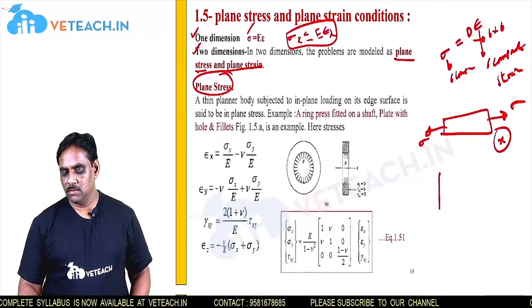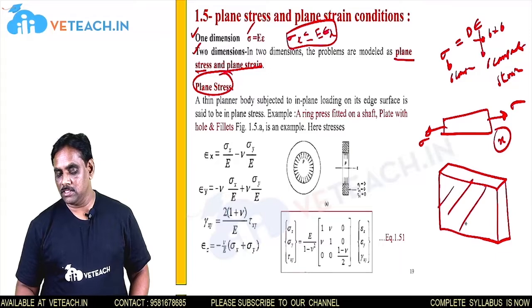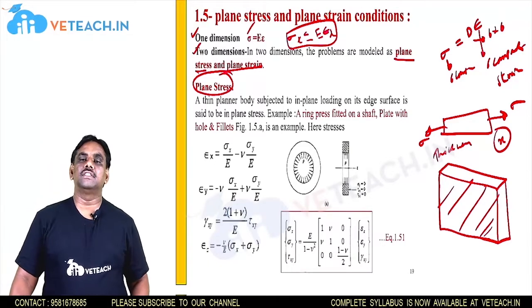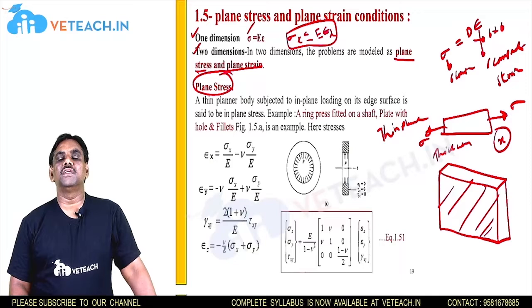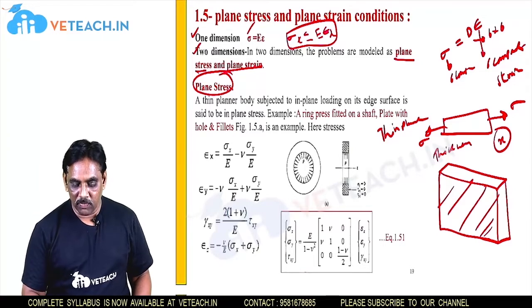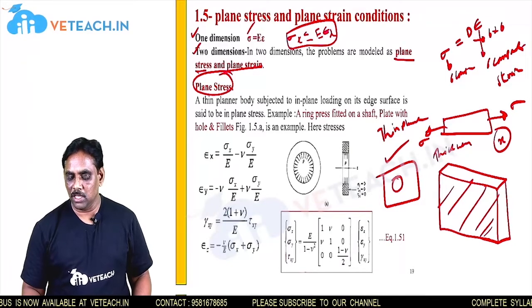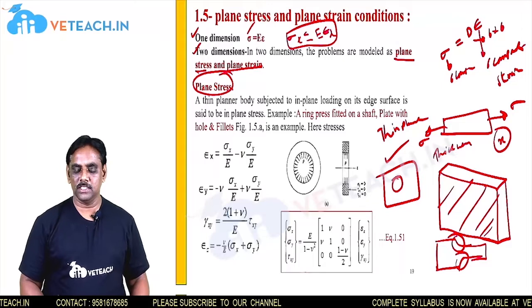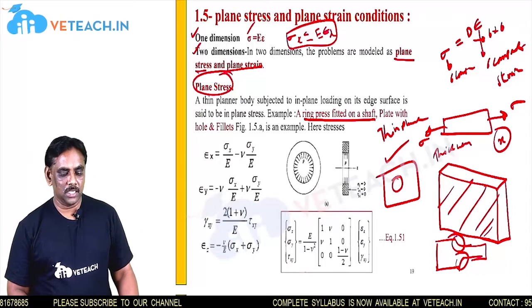Suppose if you take any 3-D object and observe carefully, the area is larger compared to the thickness — the thickness is very small. Whenever we consider thin plates, the stresses will be only in two directions; the stress along the third direction will generally be negligible — it will be 0. Examples for this case include a plate with a hole, plates with a fillet, and when we consider a ring or washer precipitated on a shaft. These cases will be considered as plane stress.